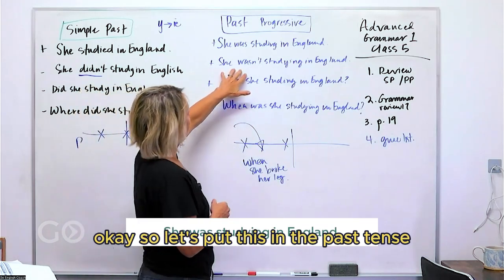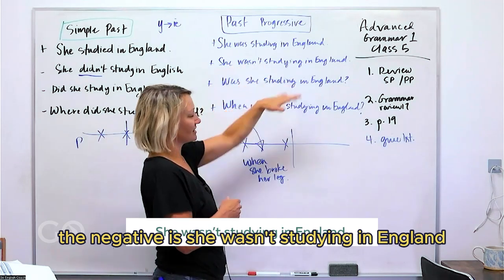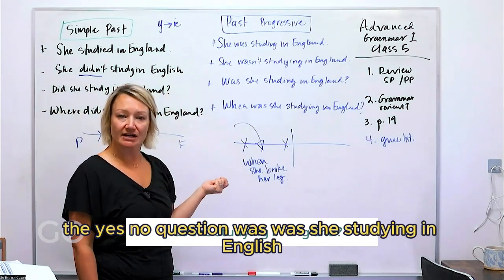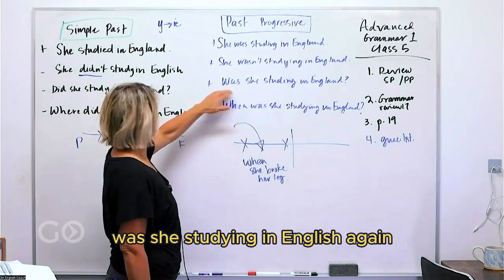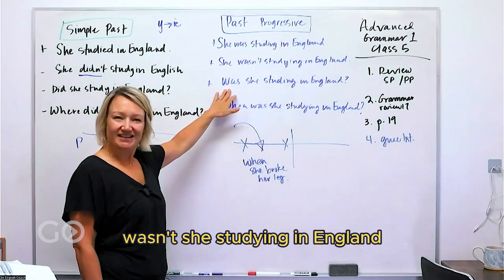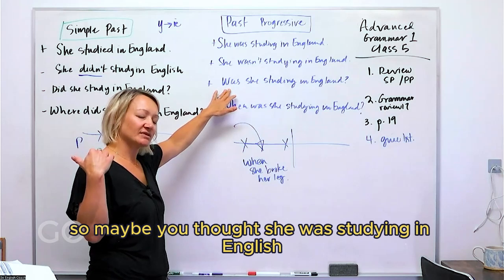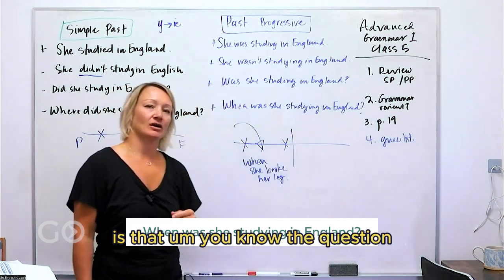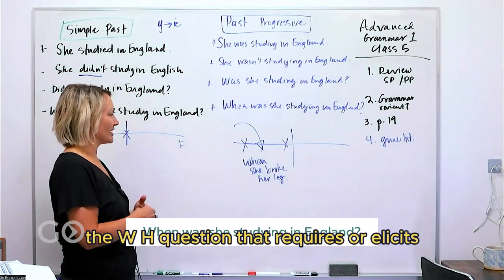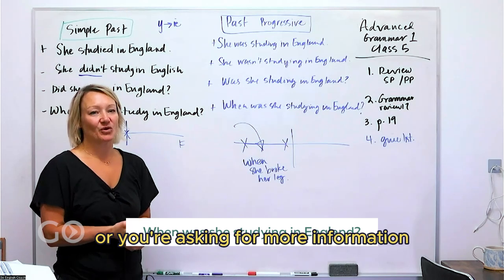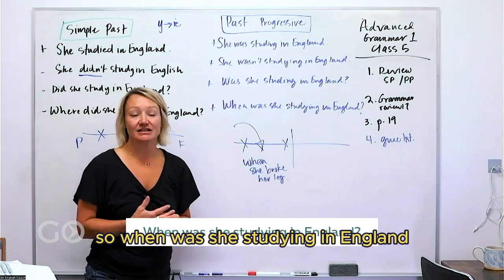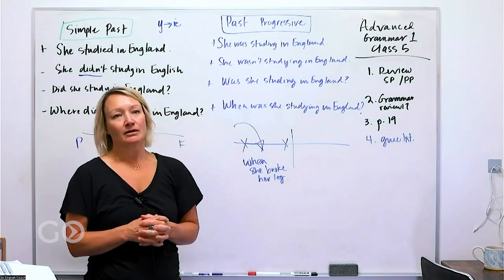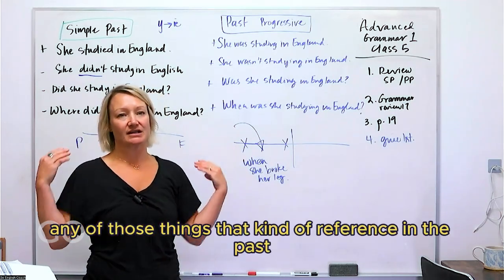So in the past progressive: 'She was studying in England.' The negative is 'She wasn't studying in England.' The yes/no question is 'Was she studying in England?' You can also say 'Wasn't she studying in England?' — a clarifying question, when you thought she was studying there but you're not sure. And the WH-question 'When was she studying in England?' asks for a timeframe — two years ago, last month, ten years ago, in March.